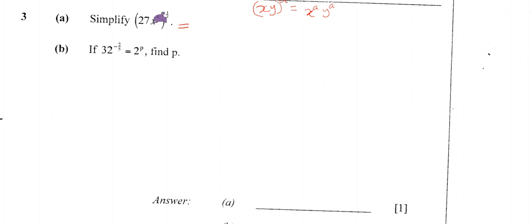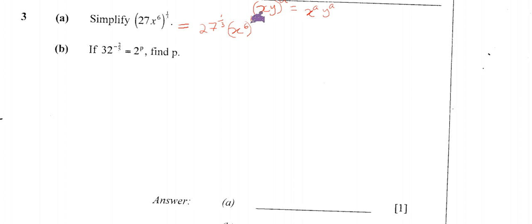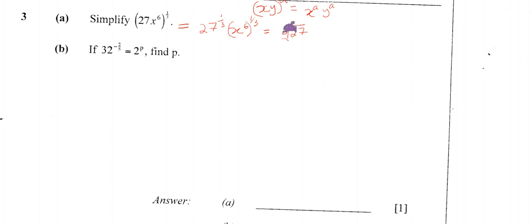So that's the same thing we do here. Which means 27 is affected by the power 1/3, and x to the power 6 is also affected by the power 1/3. So we have 27 to the power 1/3, and x to the power 6, to the power 1/3. We should remember that to the power 1 over 3 means cube root — so 27 to the power 1/3 means the cube root of 27.